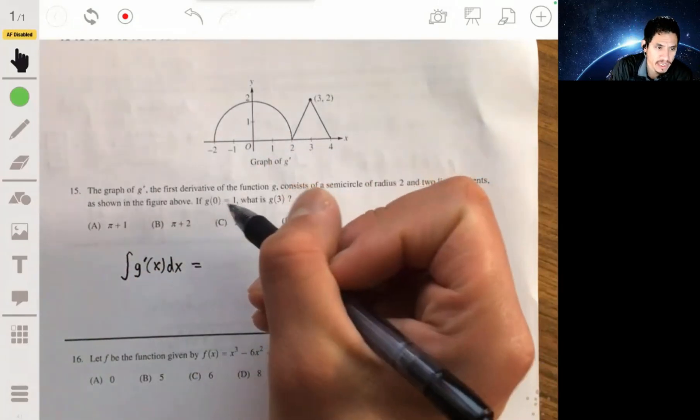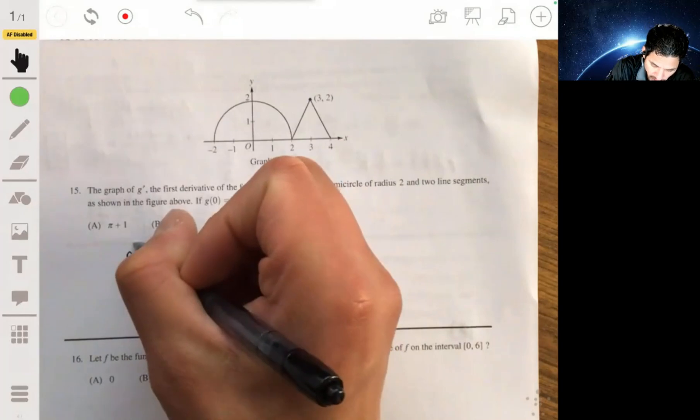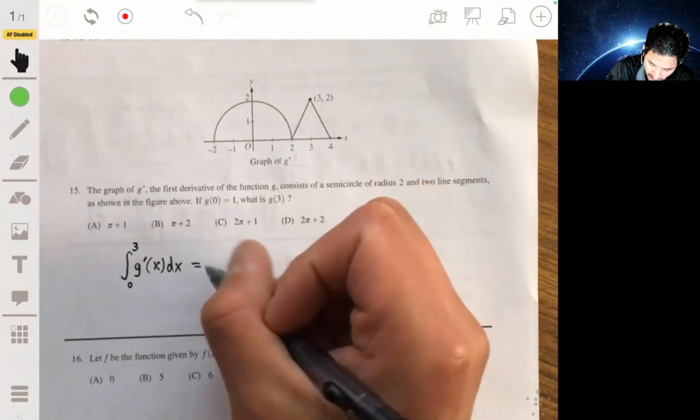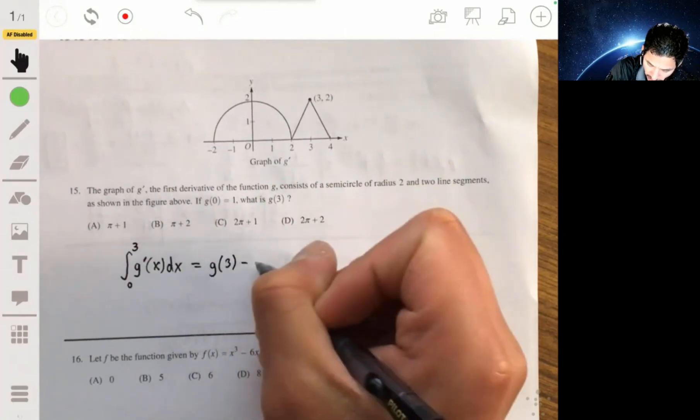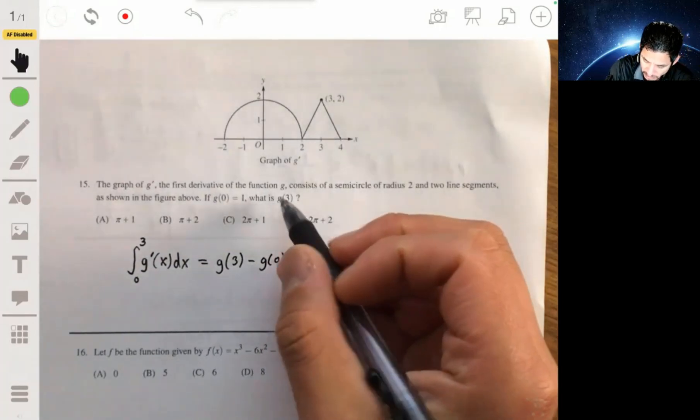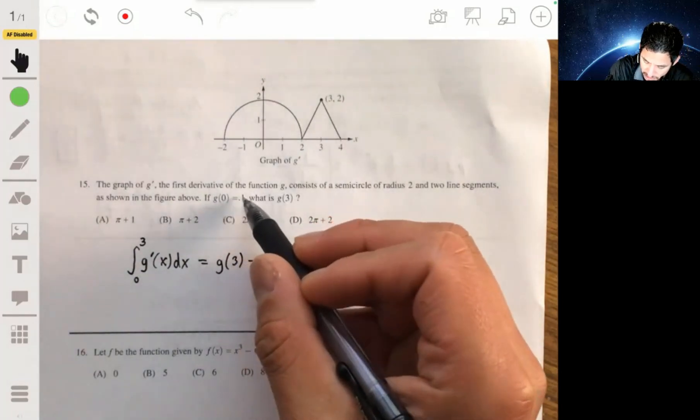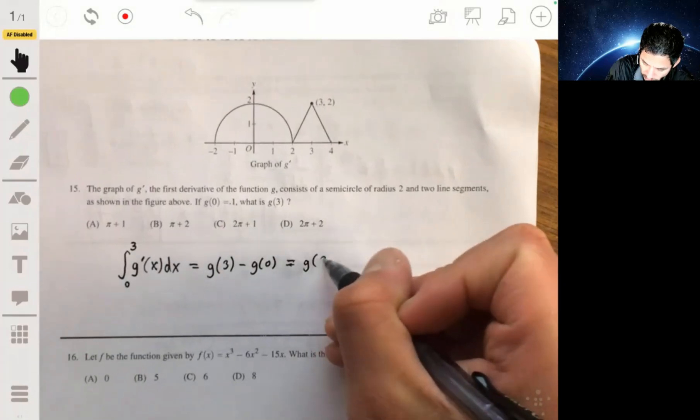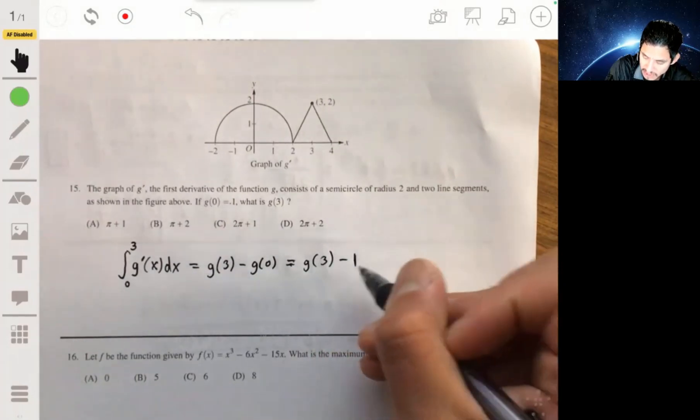For example, if we want to find G of 3, let's integrate up to 3, and since we're given G of 0, we're going to go from 0 to 3, because then this will be G of 3 minus G of 0, and if you know what G of 0 is, which is 1, you can find G of 3.